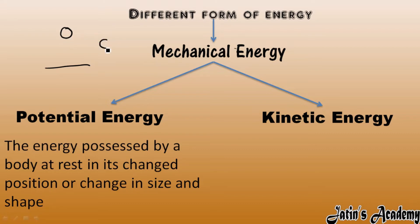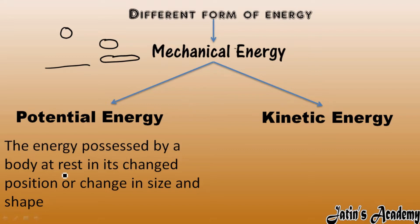When we stretch a rubber band, it gets deformed and energy is stored in the rubber band to come back to its original position — that is also called potential energy. So energy possessed by a body which is at rest, due to its change in position or change in size and shape, is potential energy.